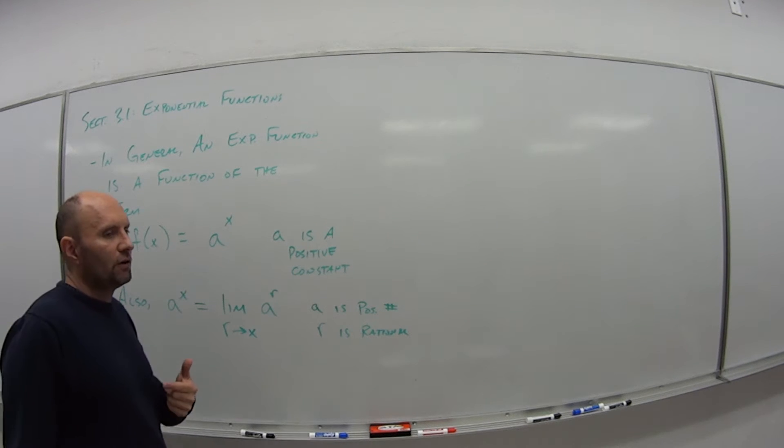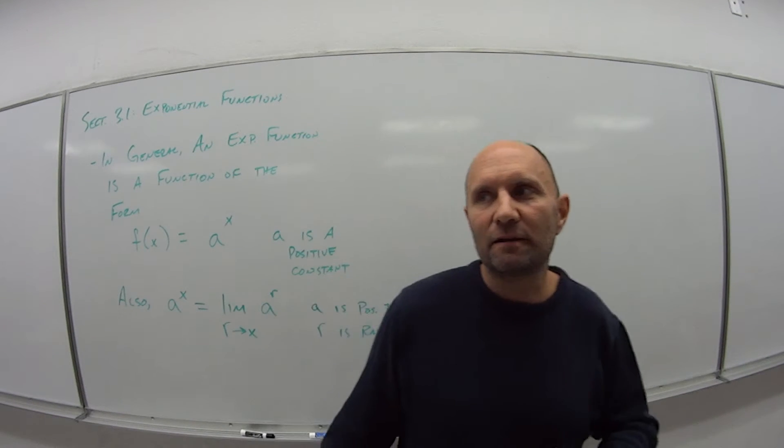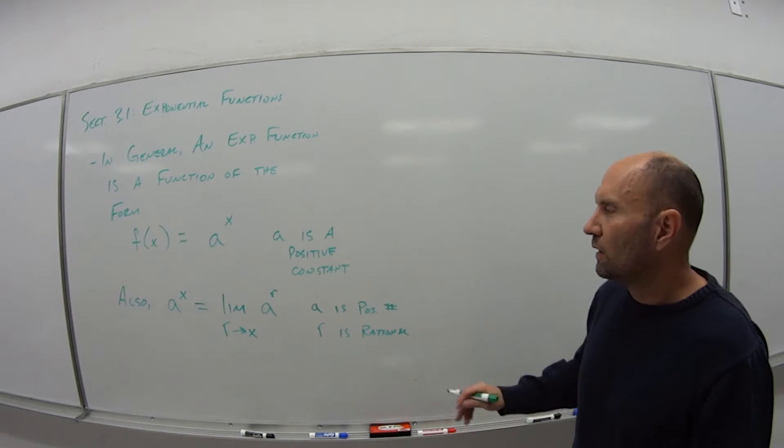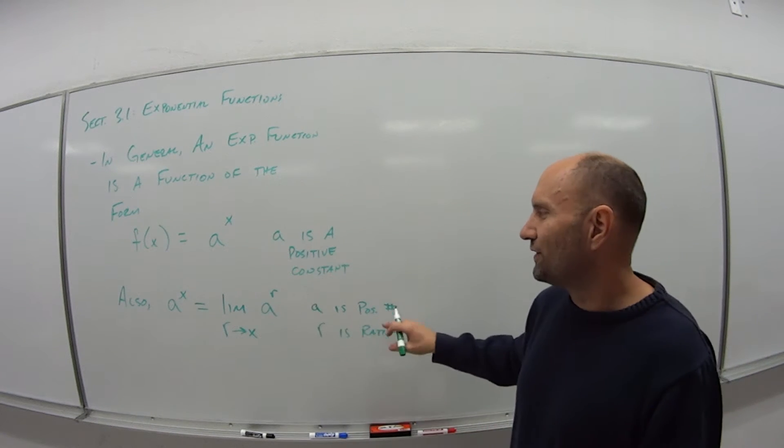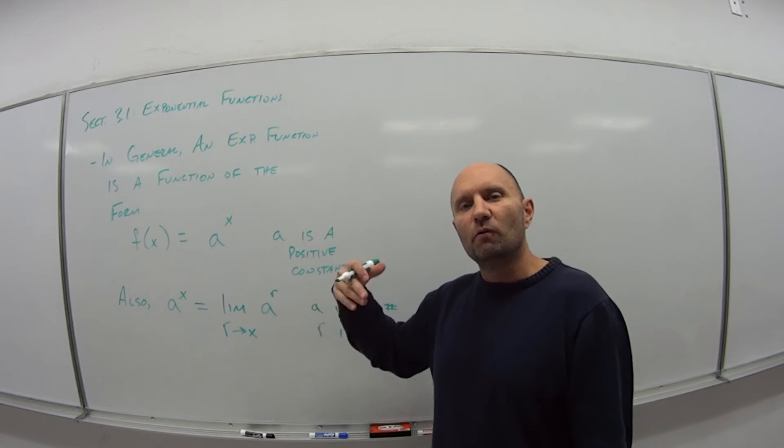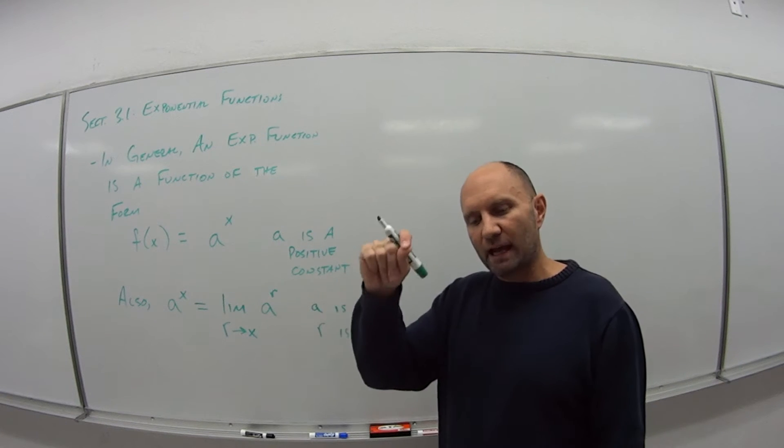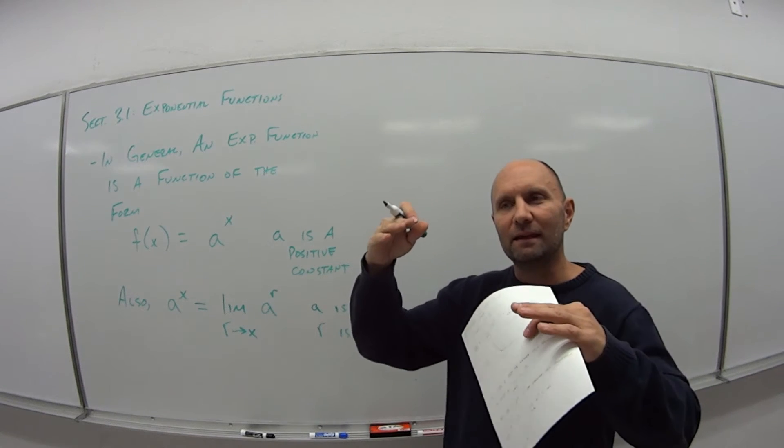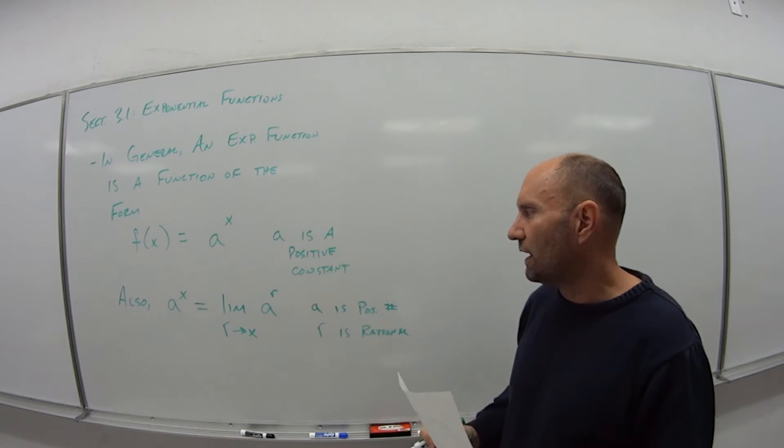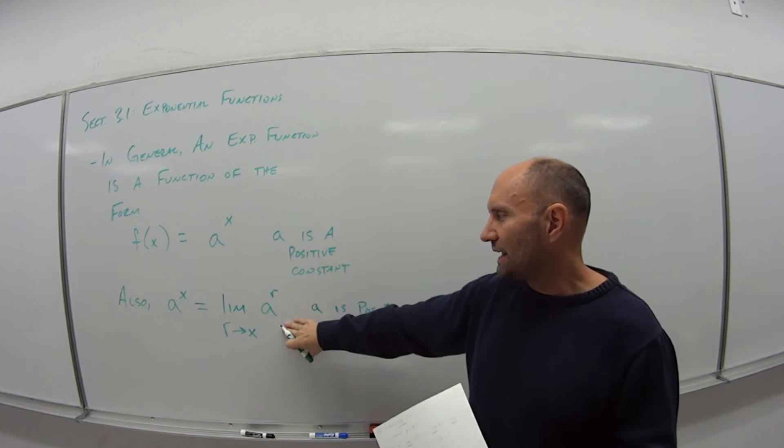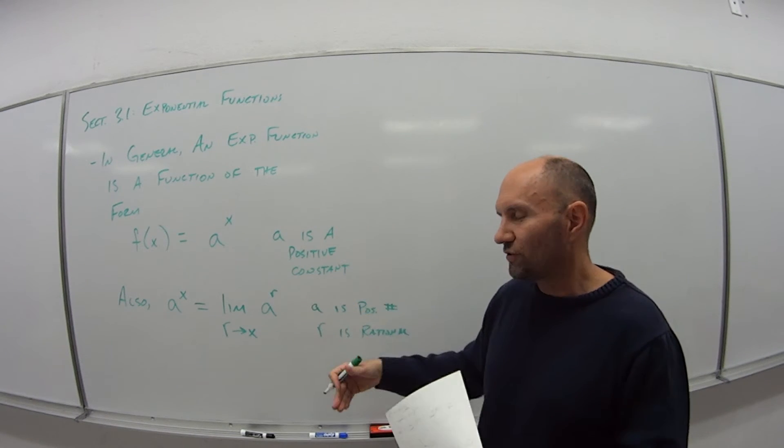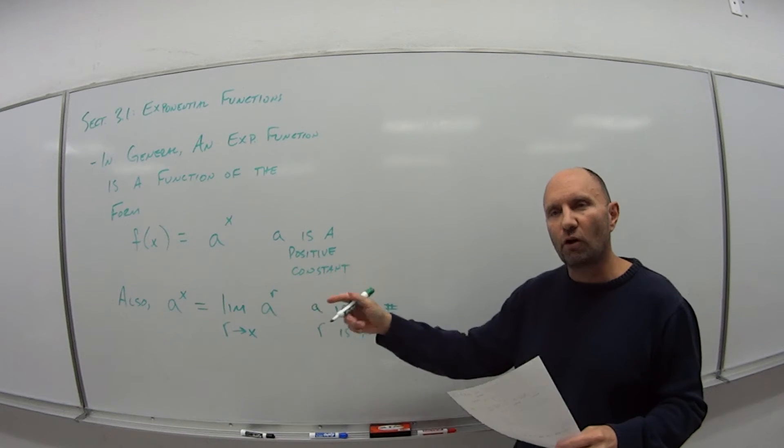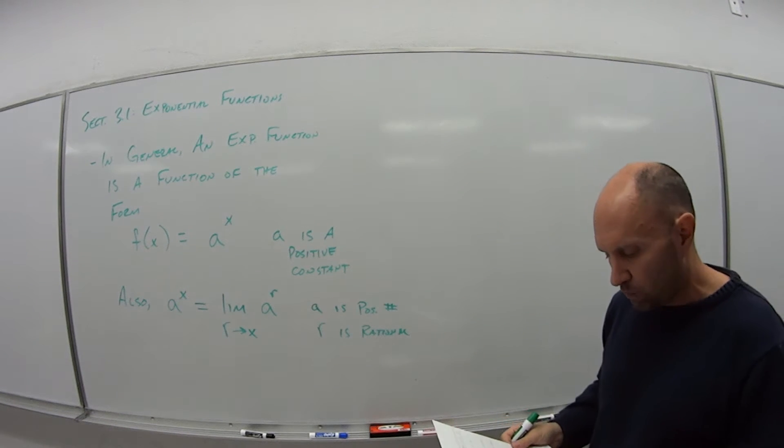r is rational. We do this why? Because we could have like 2 to the square root of 2 power. Well, square root of 2 is not rational. But remember when we're talking about limits, we're not actually talking about that exact point. We're talking about the value that it gets as r approaches that value. So by defining it like this, we can say that this works essentially for any exponential function we have because we're only talking about the limit as it goes to that point.